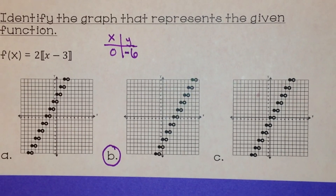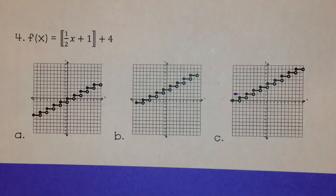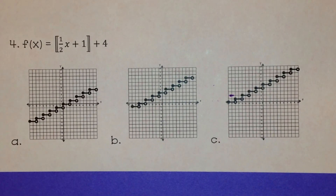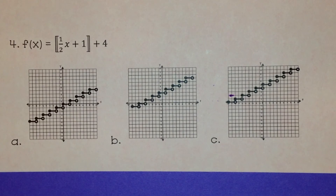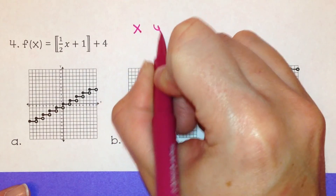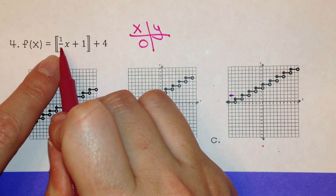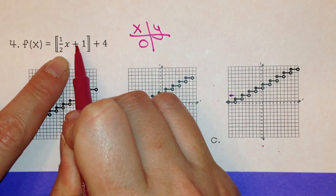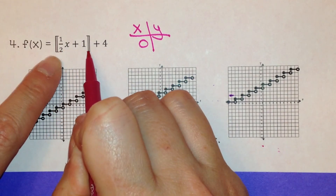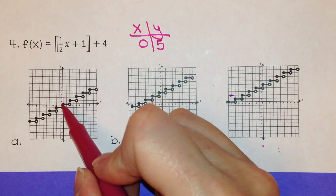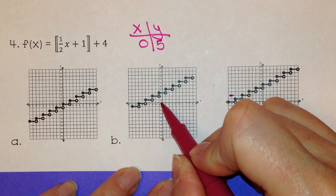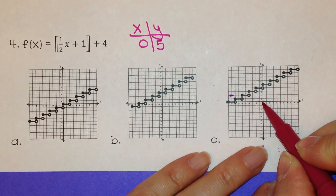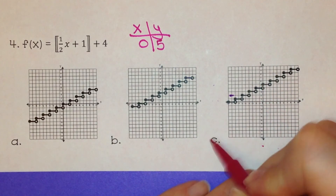Now try this one: f(x) equals the greatest integer of (one-half x plus 1) plus 4. Again, plug in x equals 0. One-half times 0 is 0; 0 plus 1 is 1; the greatest integer of 1 is 1; and 1 plus 4 is 5. So when x is 0, y should be 5. Checking the graphs: graph a gives y equal to 5 at x equals 0? No. Graph b gives y equal to 1 or 2? No. Graph c gives y equal to 5 at x equals 0. So the answer is c.